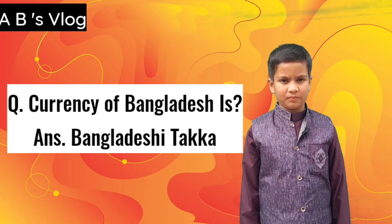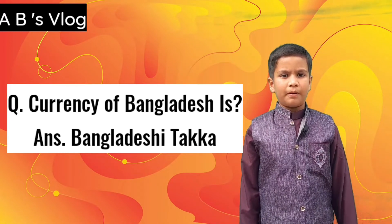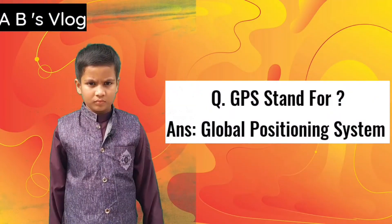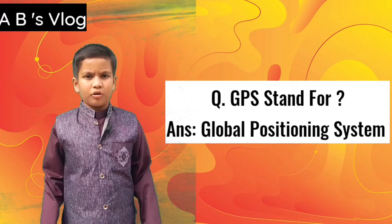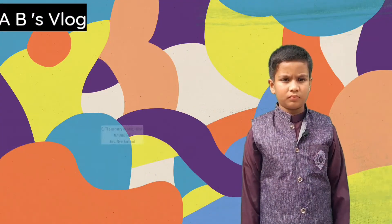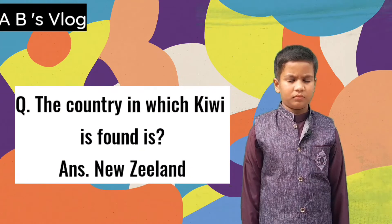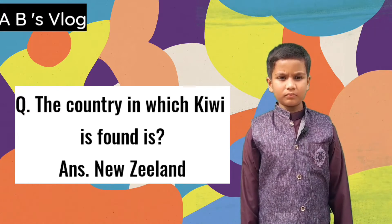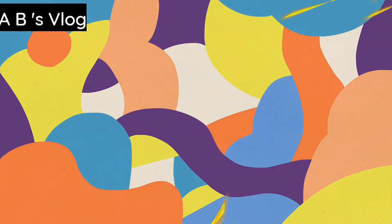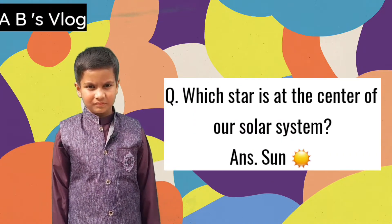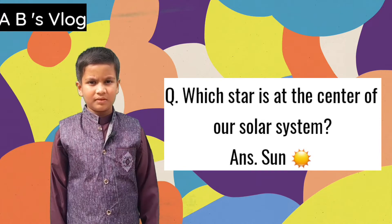Currency of Bangladesh is? GPS stands for? The country in which kiwi is found is New Zealand. Which star is at the center of our solar system? The Sun.